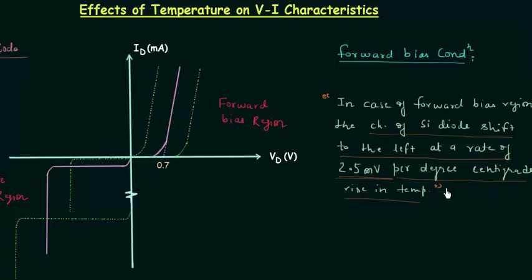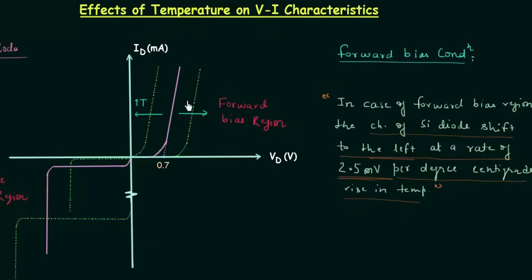If we increase the temperature, the characteristics of silicon diode will shift to the left at the rate of 2.5 mV per degree centigrade rise in temperature. So the plot will shift to the left on increasing the temperature, and on decreasing the temperature the plot will shift to the right.